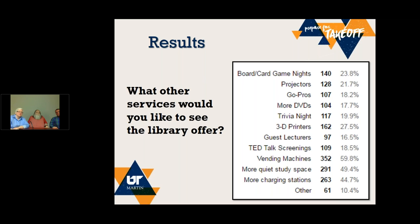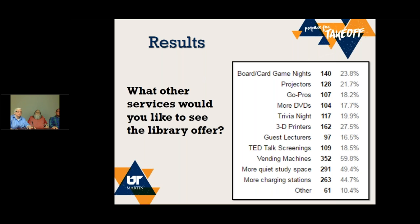These are some of the results we got back about other services that students would like to see the library offer: board game night, projectors, GoPros, more DVDs, trivia night, a 3D printer, guest lectures, and vending machines — at one time the library didn't have any vending machines. Students could choose as many of these options as they wanted. We also had an 'other' option down at the bottom. Only about 10% of students used the 'other' option, which was pretty consistent throughout the survey. We didn't just pull these out of the air — we had anecdotal evidence for a lot of these.